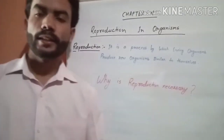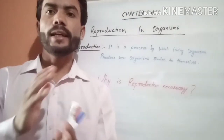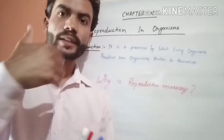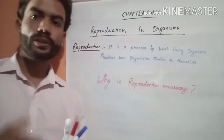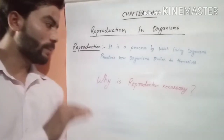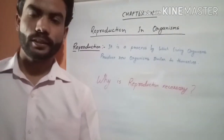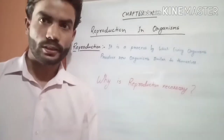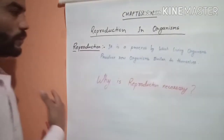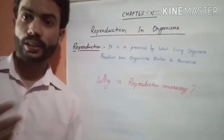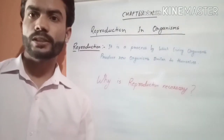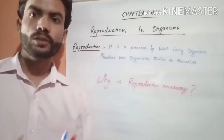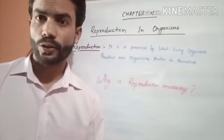दूसरा है transmission of character — अपने characters को अपनी generation से next generation में पहुचाना, उसको transmit करना, इसलिए reproduction जरूरी होता है। और तीसरा होता है variation. Variation का मतलब होता है changes — lots of changes. जैसी reproduction की process होती है, उसमें variation देखने को मिलता है, मतलब एक generation से अगले generation में produce करते हैं तो उसमें little bit variation देखने को मिलता है।